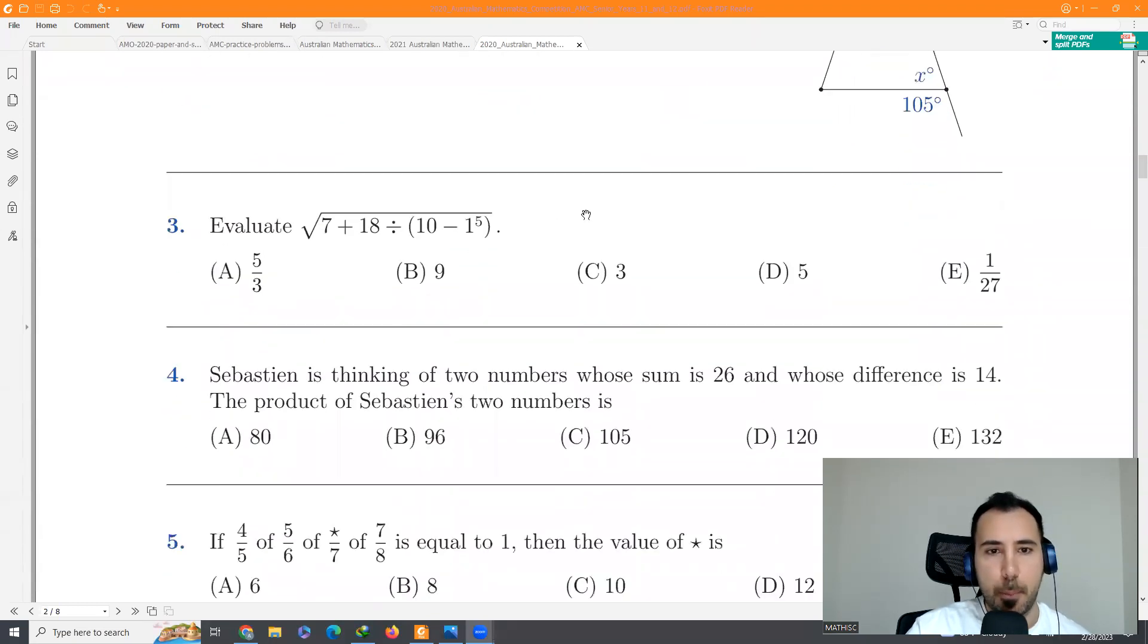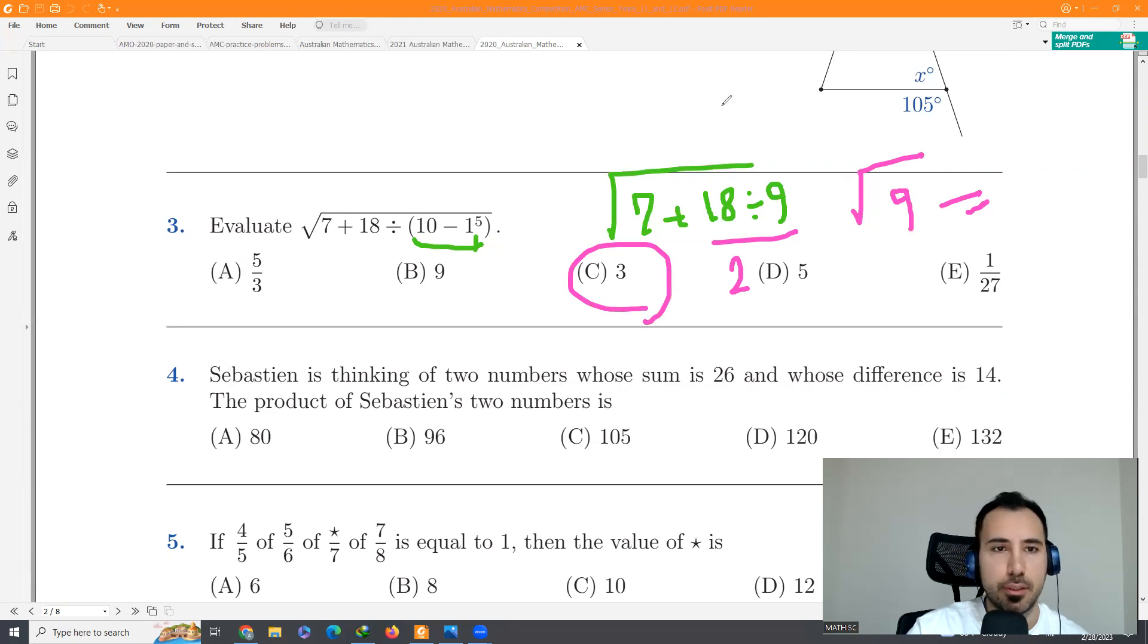Question three, again, not very difficult. You must know the orders. Well, this will be first one to the fifth power is one, 10 minus one, nine. So we'll have 7 plus 18 divided by 9. Now it's important, which one goes first. Multiply and division go first. So this would be 2, 7 plus 2, square root of 9, three is the answer. Not very difficult.